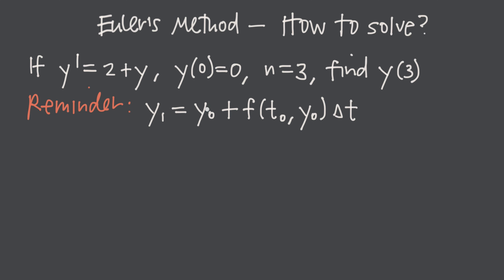So applying it once gives y₁ using y₀, t₀, and y₀. To find y₂ we use y₁, t₁, and y₁. To find y₃ we use y₂, t₂, and y₂. The values on the right are always 1 less than the value on the left.